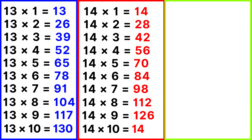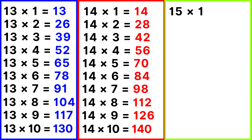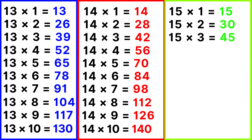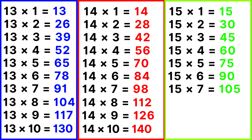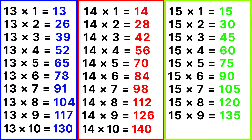14 tens are 140. Table of 15: 15 ones are 15, 15 twos are 30, 15 threes are 45, 15 fours are 60, 15 fives are 75, 15 sixes are 90, 15 sevens are 105, 15 eights are 120, 15 nines are 135, 15 tens are 150.